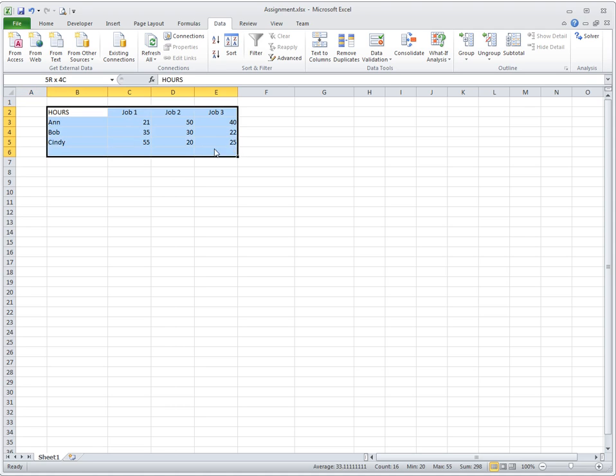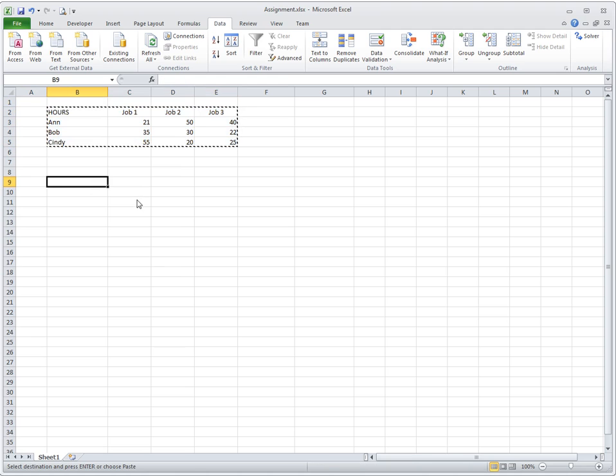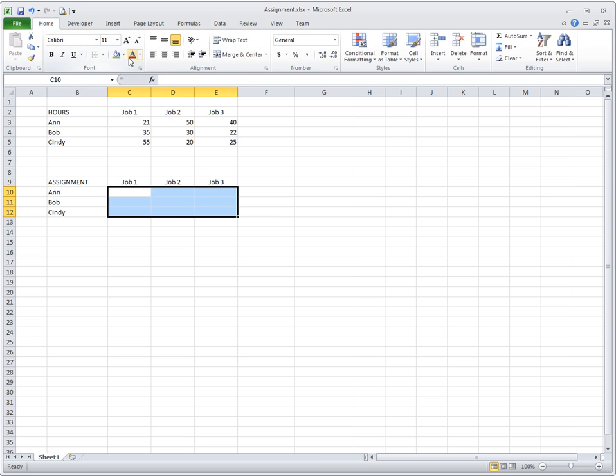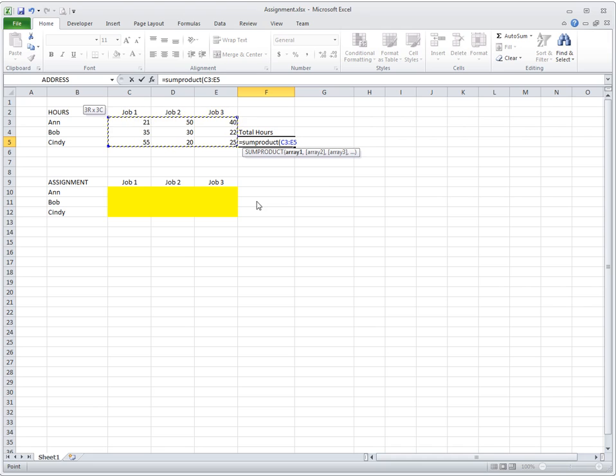So you'll see that the structure here of the model in Excel will be very similar. We have, instead of having the costs, now we have hours, and I'll again copy the structure here of the table to have the variables, and I'll call them assignment. These are the assignment variables, the number of employees assigned to the jobs, and of course we'll expect this to be either zero or one. So now if I have this, I can say total hours will be calculated as sum product here of those hours and the assignment variables, which will be zero or one. So that's my objective function.